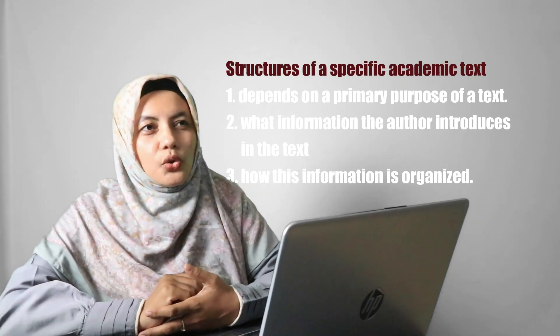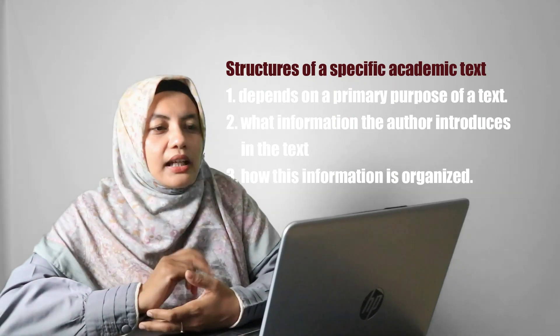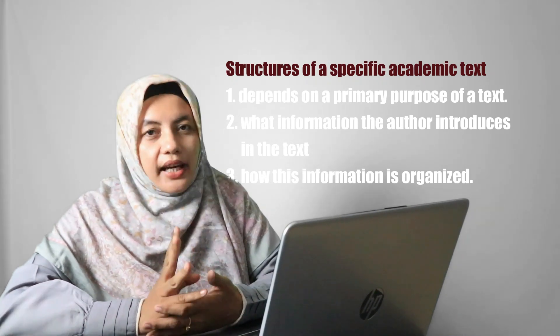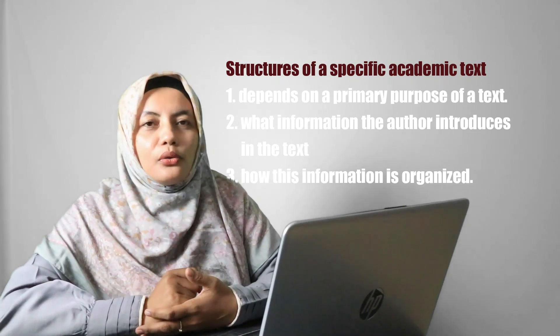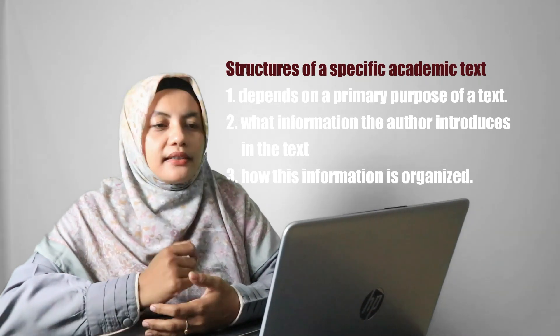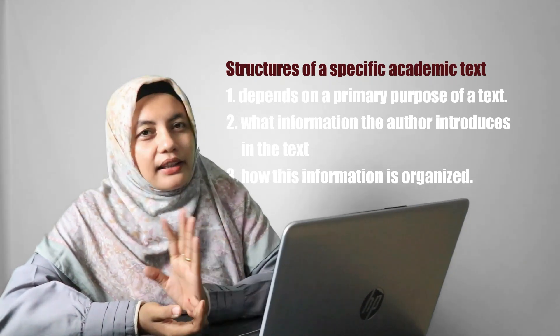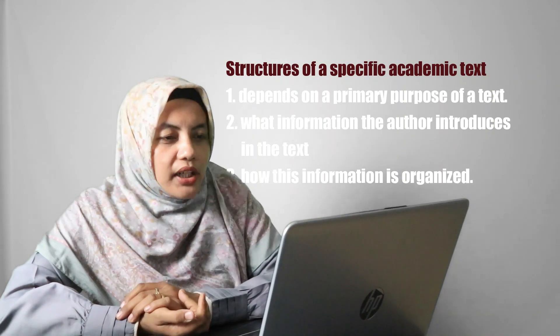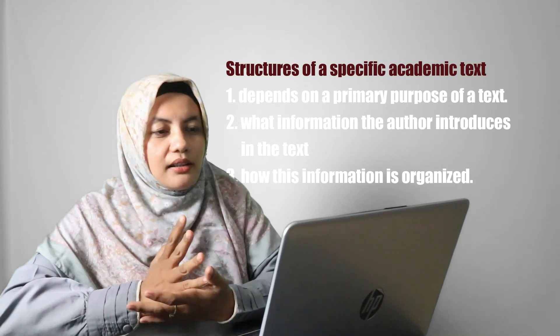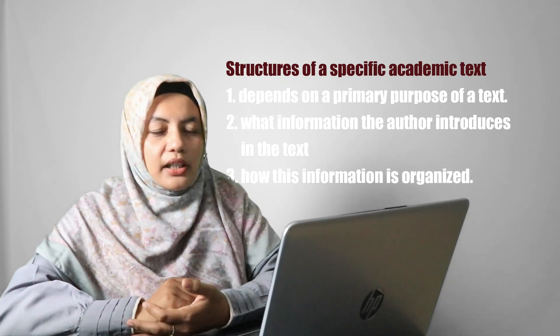The second is what information the author introduces in the text. What information does the author want to provide in that text? Is the information in the form of cause and effect or in another form? The third is how this information is organized in the text.